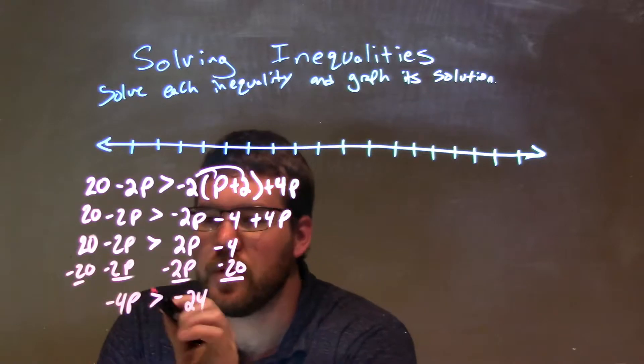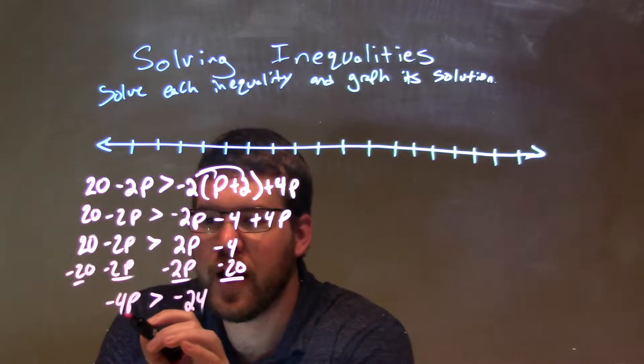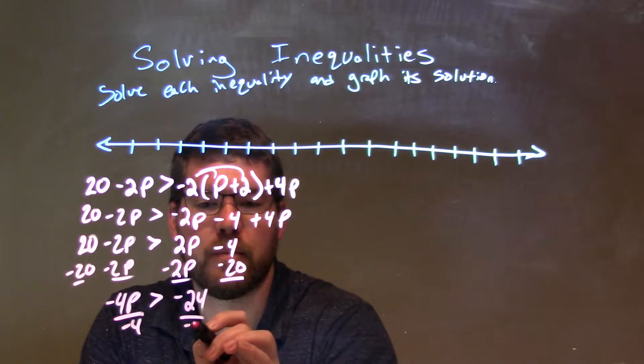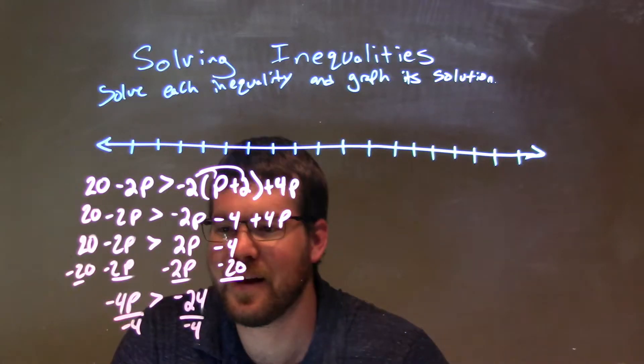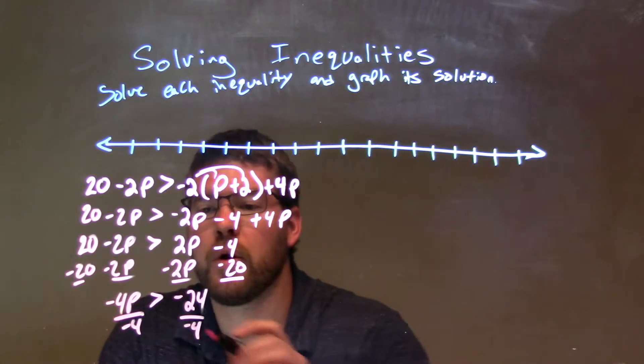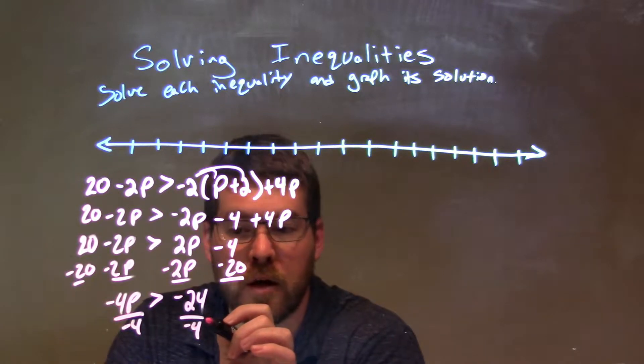Okay, so now what I'm going to do is I'm going to divide by negative 4 to both parts, and this is where it gets a little tricky. We're going to be divided by a negative over the inequality.